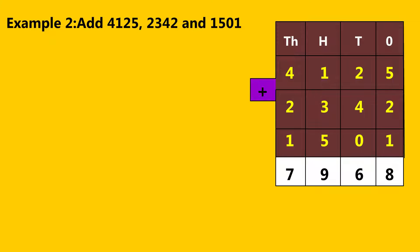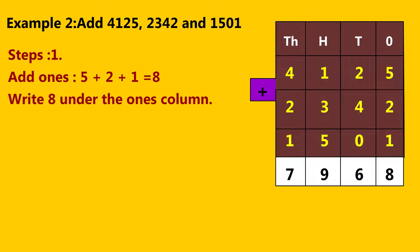Example 2: Add four thousand one hundred and twenty-five, two thousand three hundred and forty-two, and one thousand five hundred and one. Step 1: Add ones. Five plus two plus one equals eight. Write eight under the ones column.